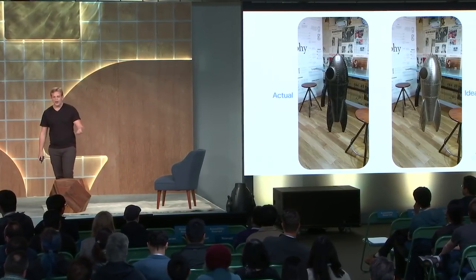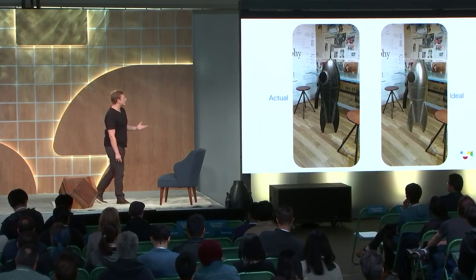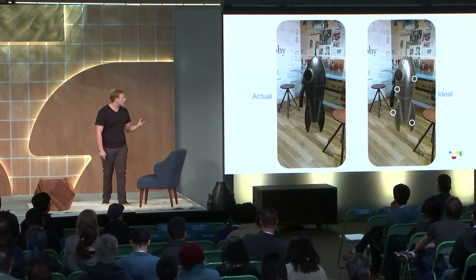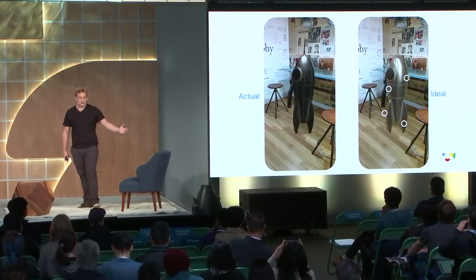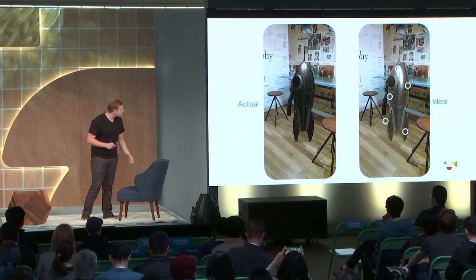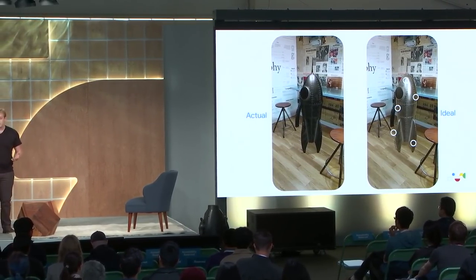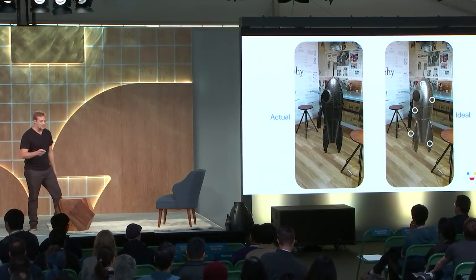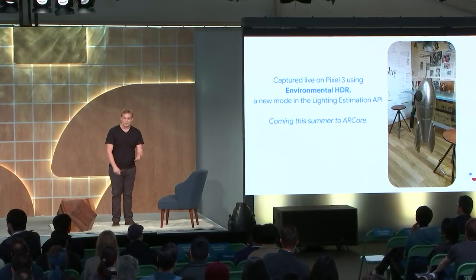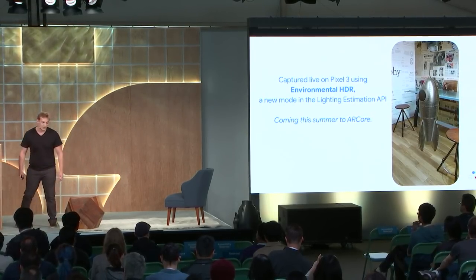What we'd love is for this nice shiny rocket to look like what you're seeing on the right of the screen. Here, the rocket blends much more nicely with the scene — we've got a directional shadow matching the surroundings, specular highlights covering large chunks of the rocket representing where the light is actually coming from, and the shading picks up the colors of the ambient environment. This looks a lot more believable, and luckily, this was captured live on a Pixel 3 using environmental HDR, a new mode for lighting estimation we're bringing to ARCore this summer.